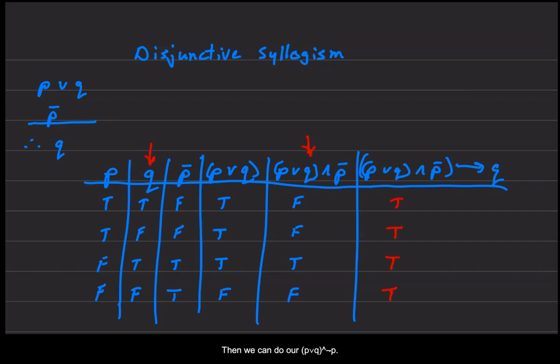Then we can do our P or Q and not P. P or Q and not P gives us false and true is false. False and true is false. True and true is true. True and false is false.